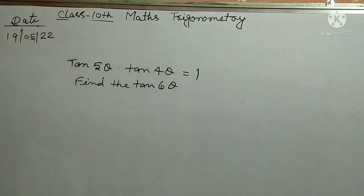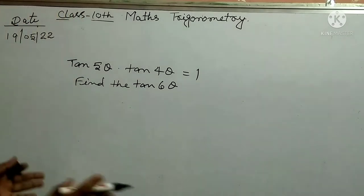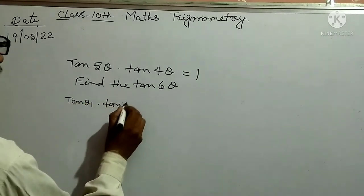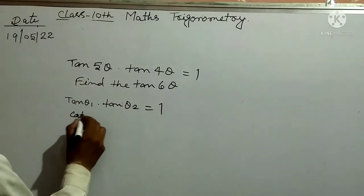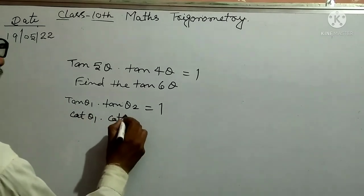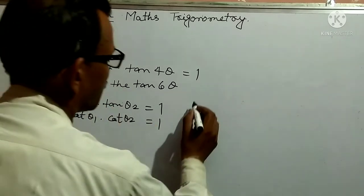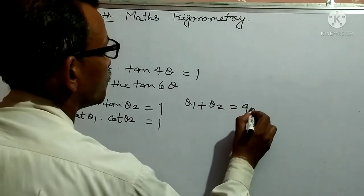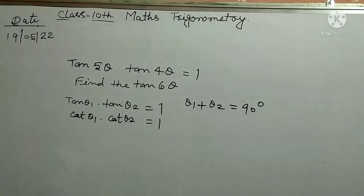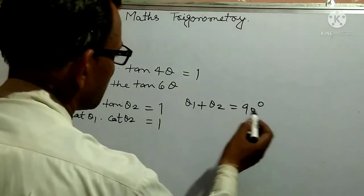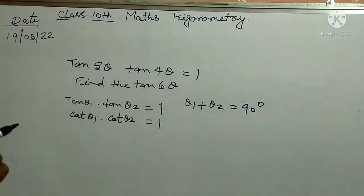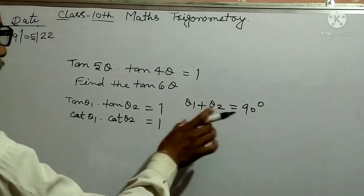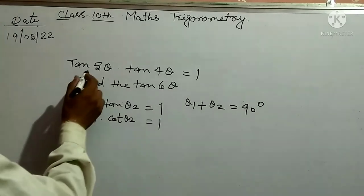The magic method: if tan(θ₁) × tan(θ₂) = 1, then cot(θ₁) × cot(θ₂) = 1. This means the sum of the two angles, θ₁ + θ₂, is equal to 90 degrees.